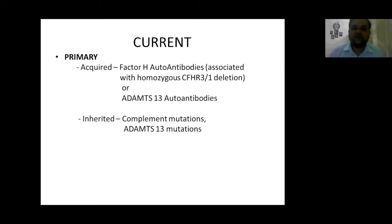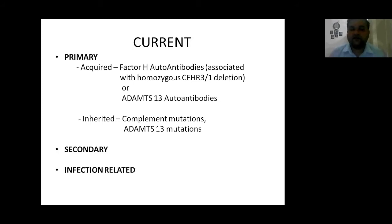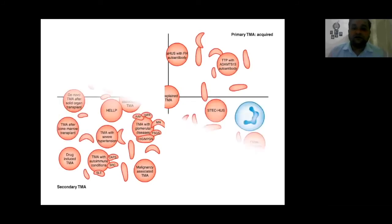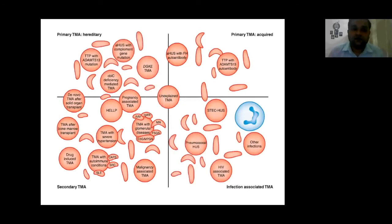The current classification is primary — which may be acquired or inherited. In acquired, we have autoantibodies against factor H or autoantibodies against ADAMTS-13. In primary inherited, we have complement mutations or ADAMTS-13 mutations leading to TMA. Then there are secondary and infection-related forms. Primary TMA hereditary includes hemolytic uremic syndrome with complement gene mutation, TTP with ADAMTS-13 mutation, cobalamin C deficiency-mediated TMA, and DGKE-mediated TMA. Primary TMA acquired includes autoantibody against factor H and autoantibody against ADAMTS-13.